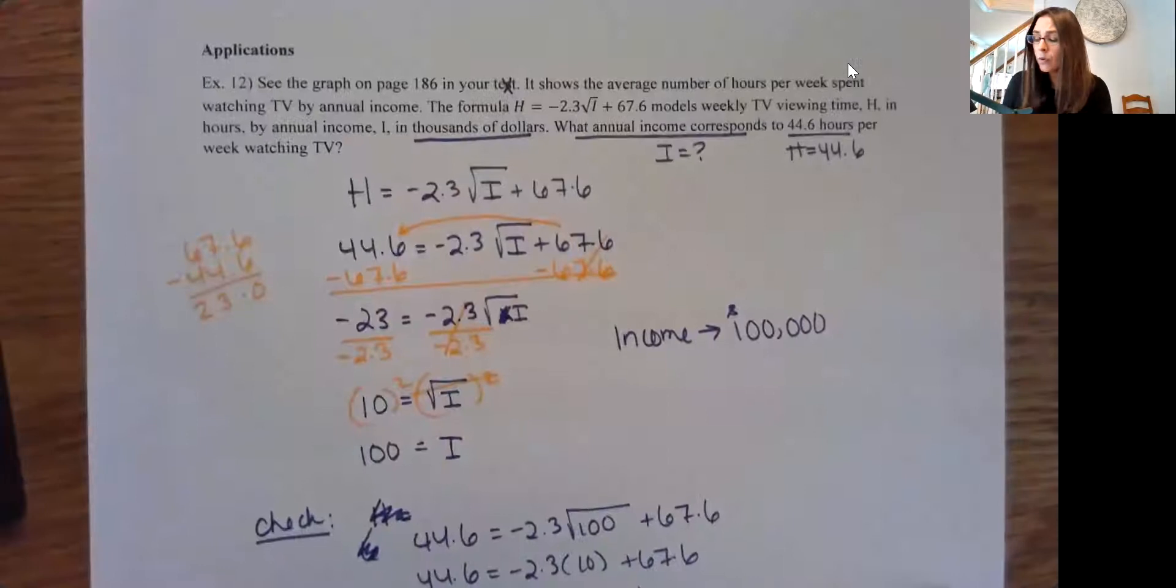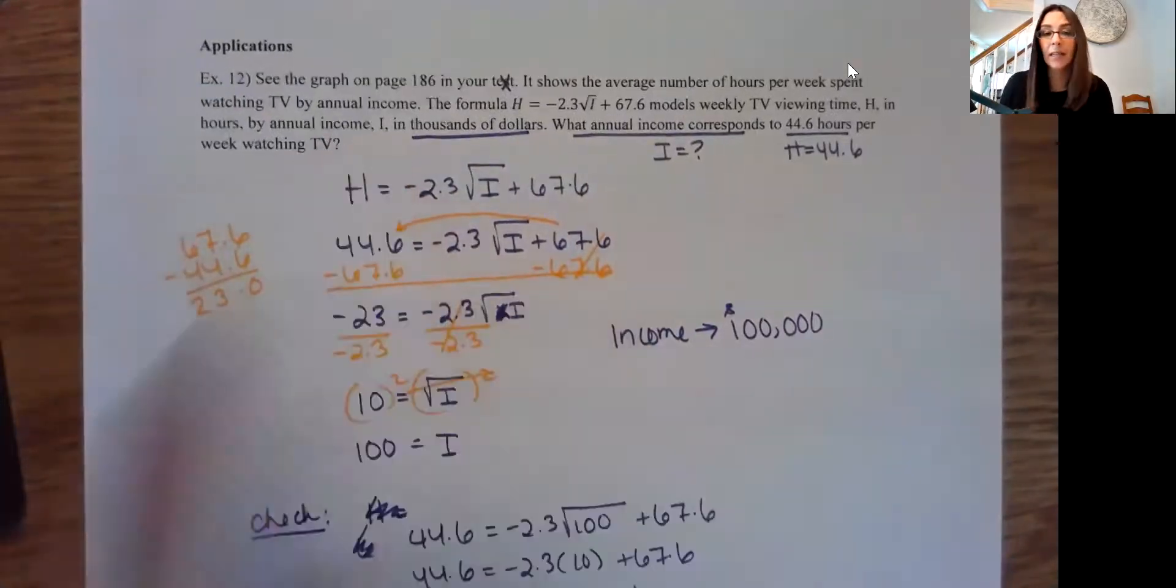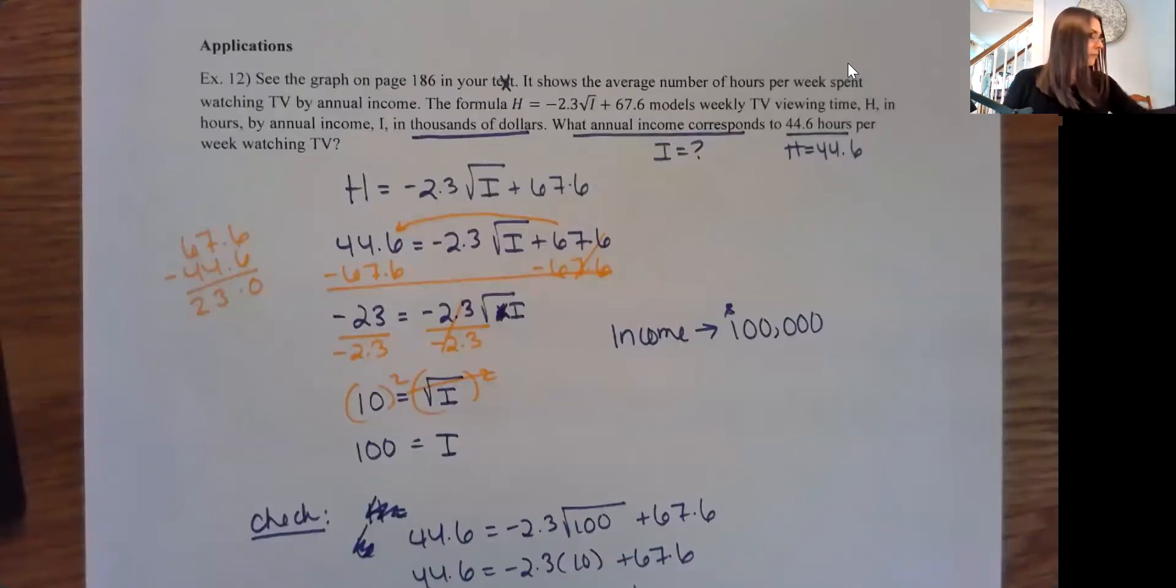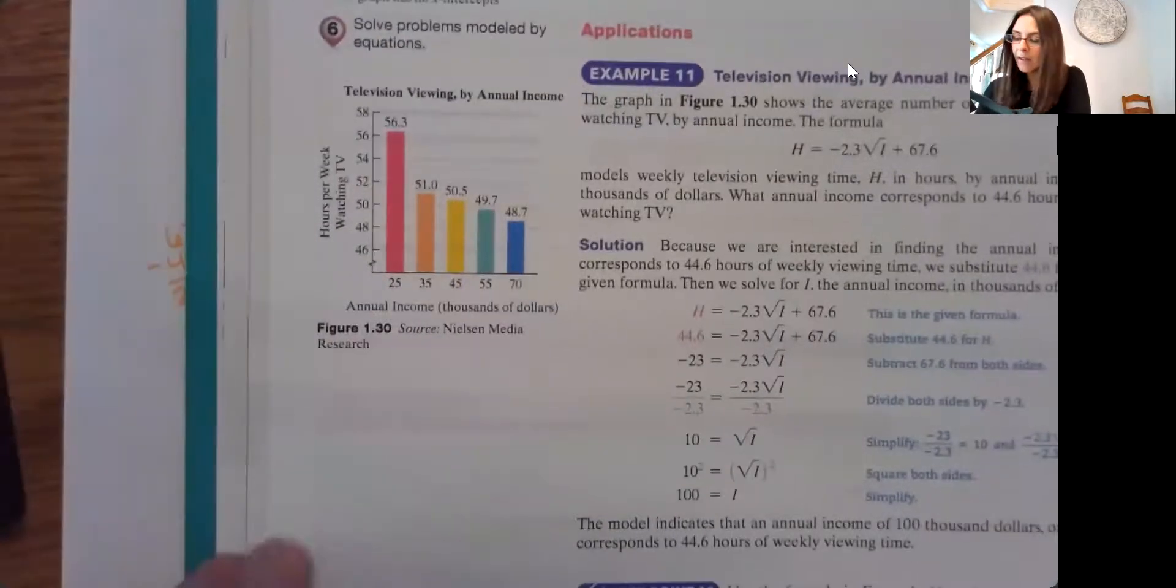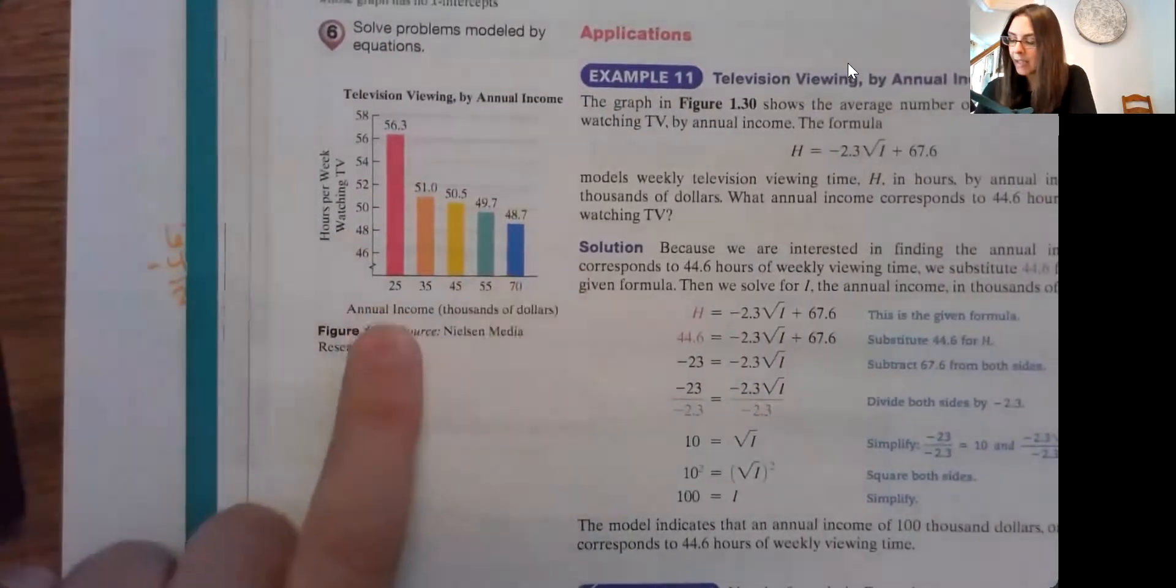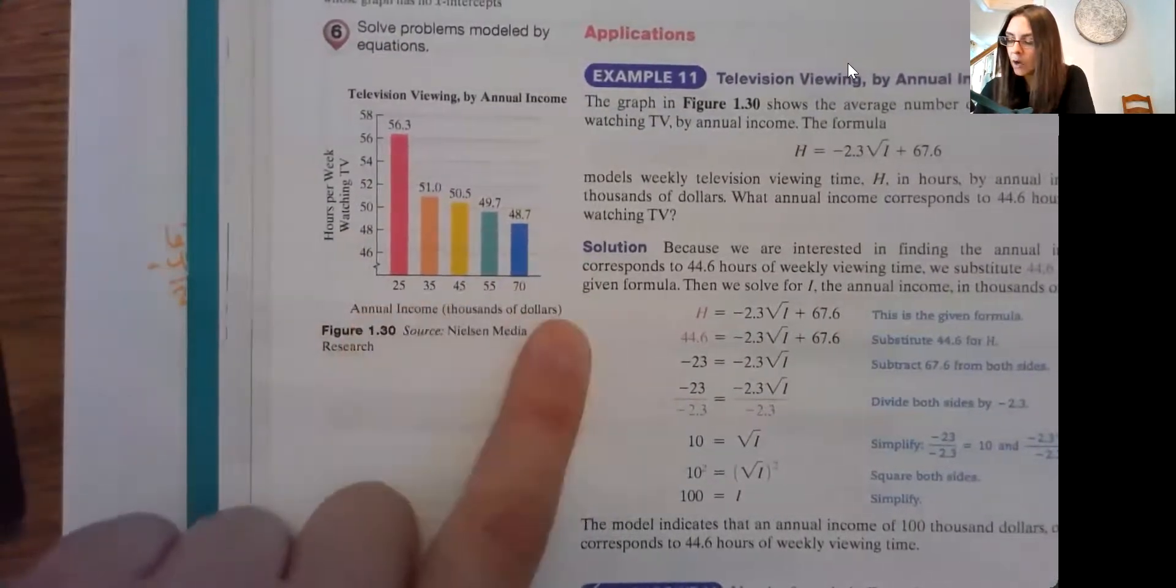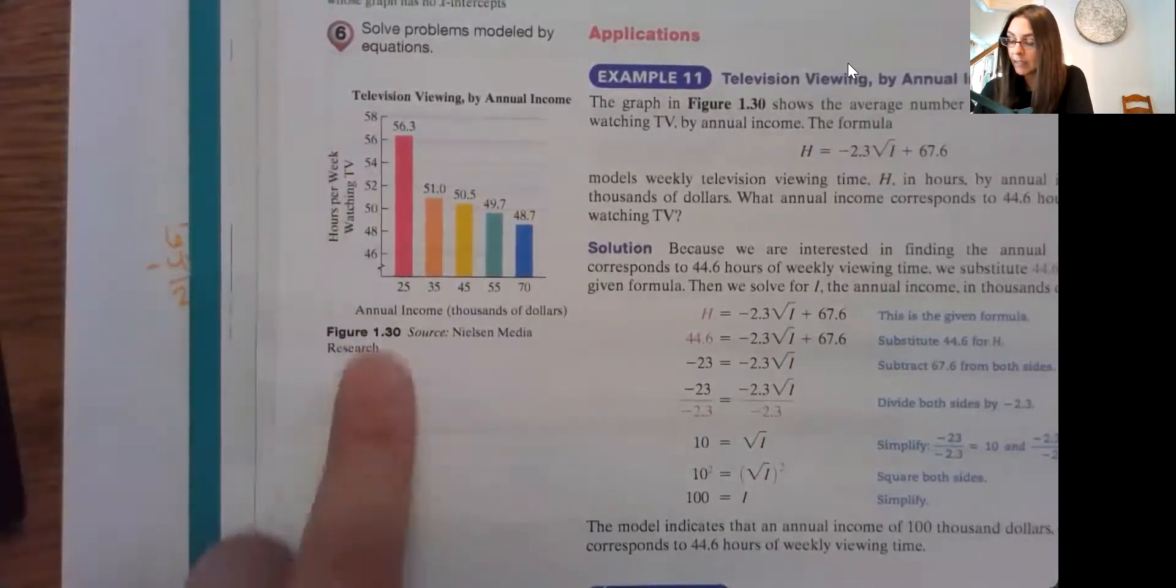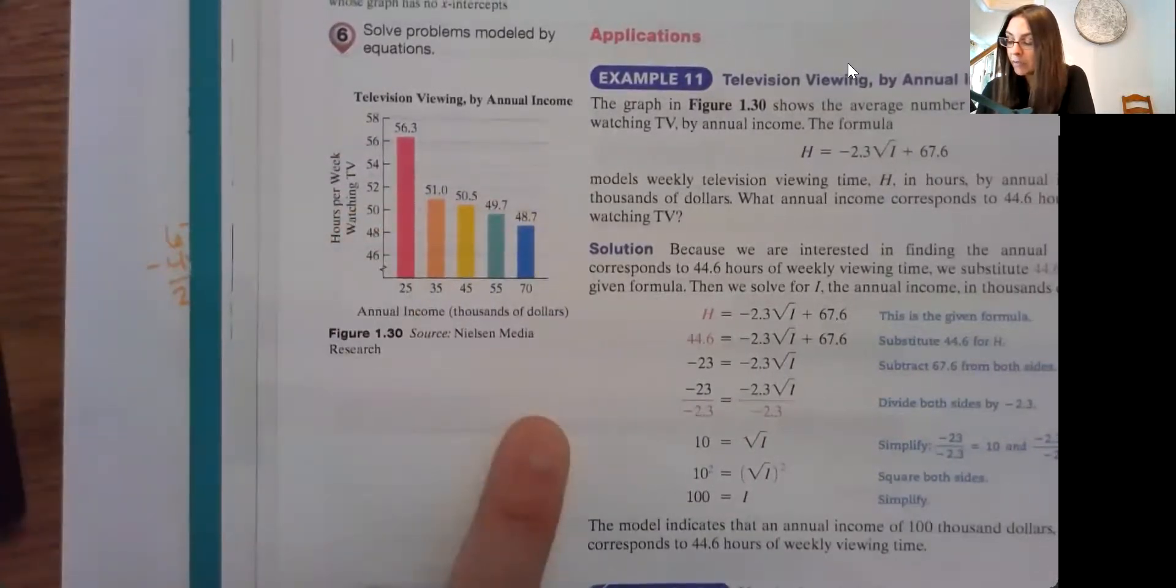So people who earn around $100,000 a year watch about 44.6 hours per week or spend 44.6 hours per week watching TV. And again, this, of course, is on average. And you can look at it more on your own. But here, if you look at your text, you do have a nice little graph there.